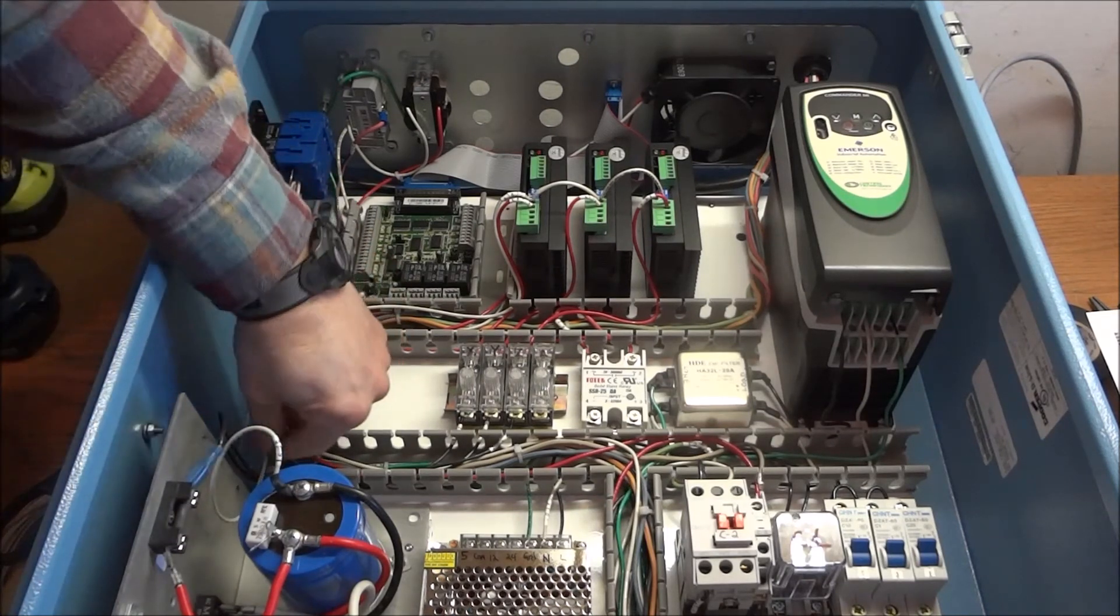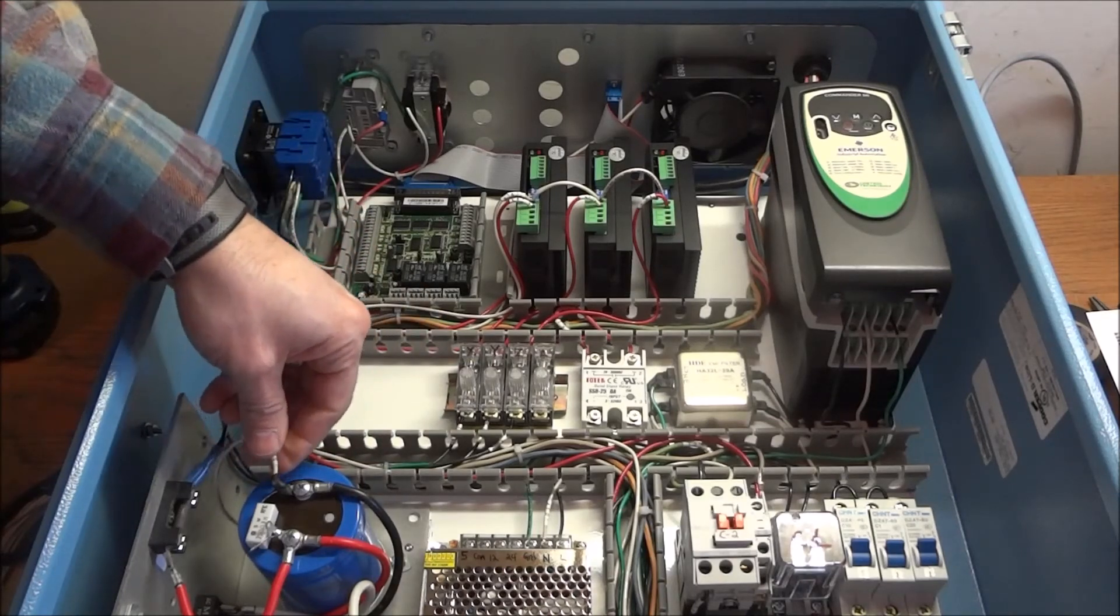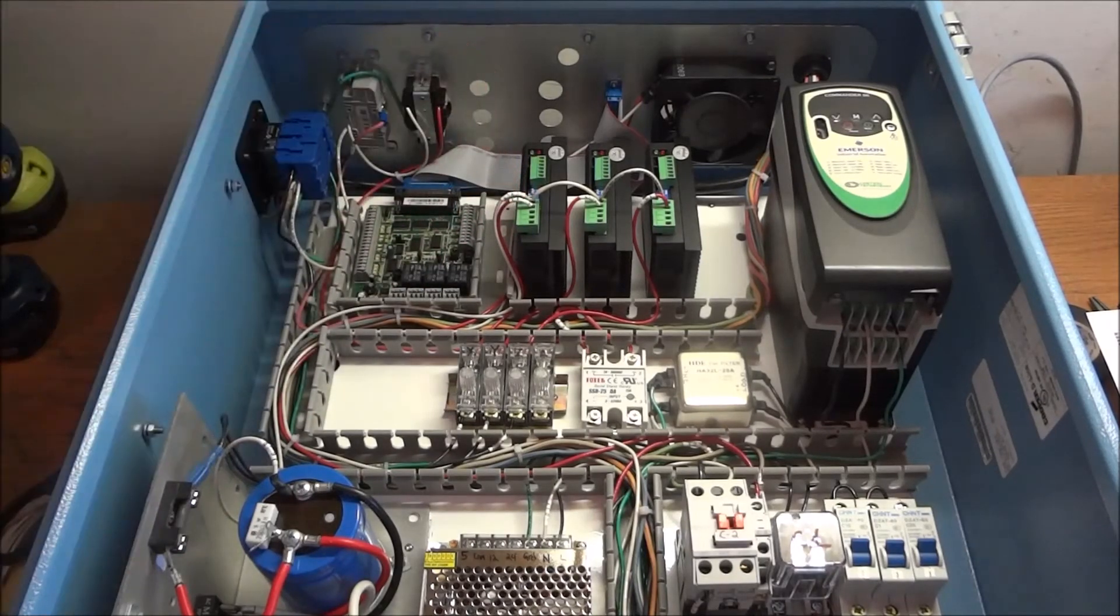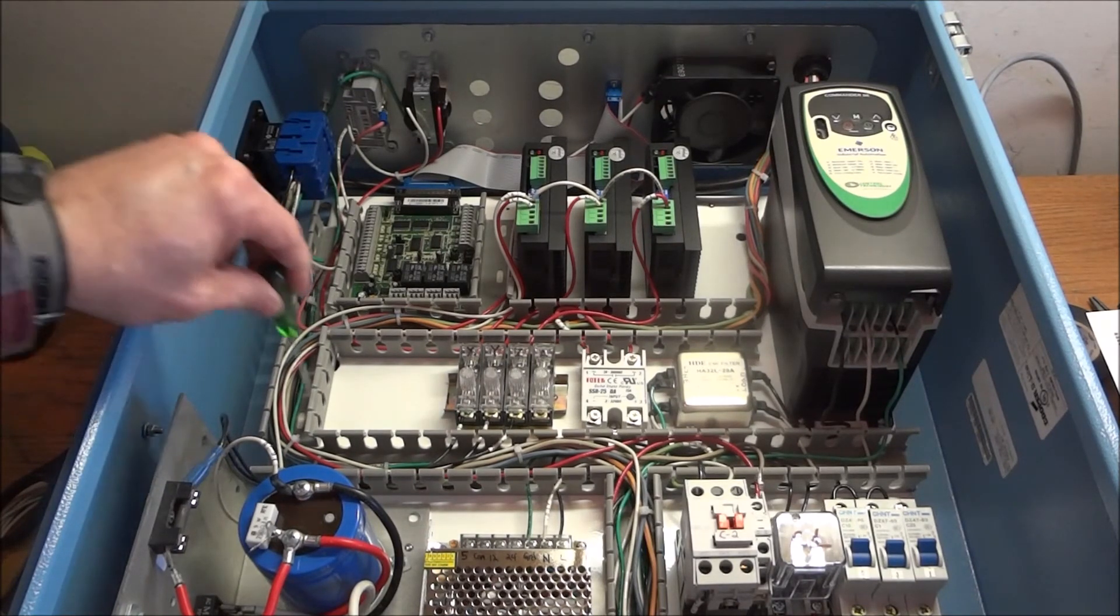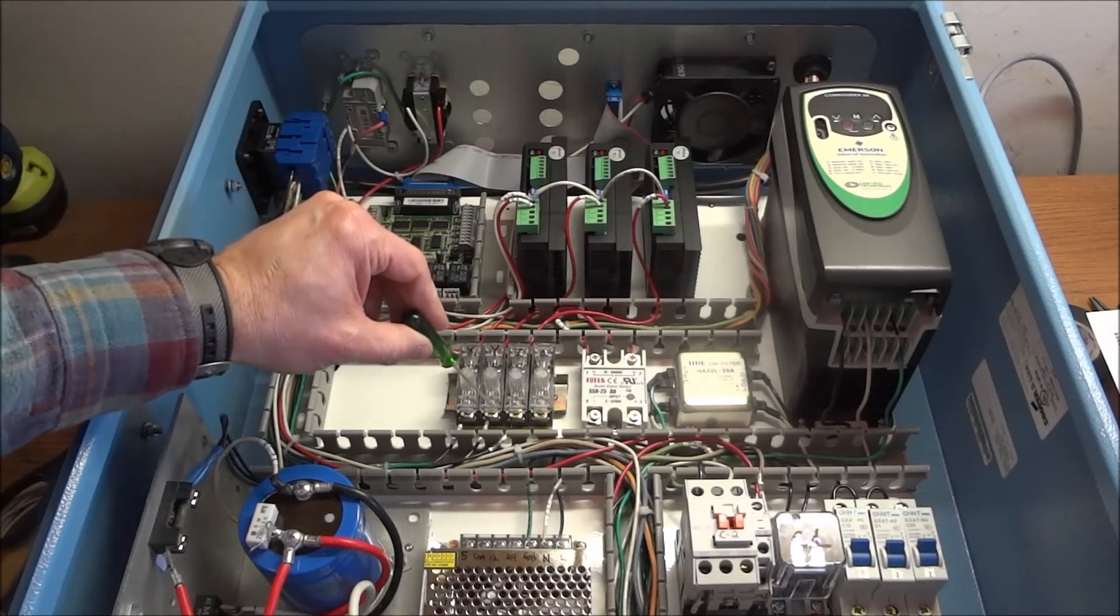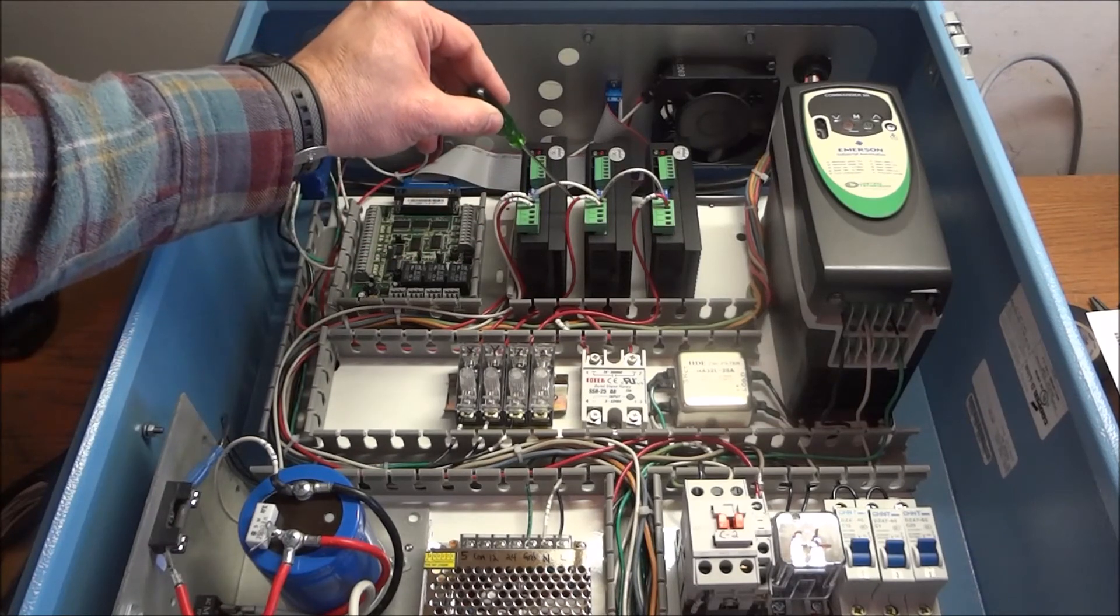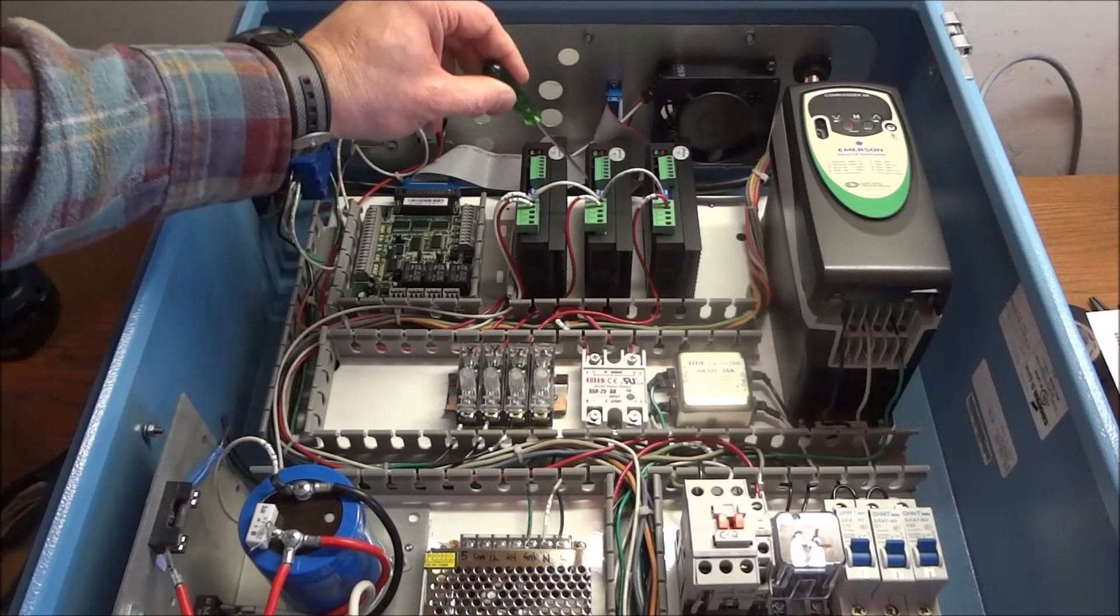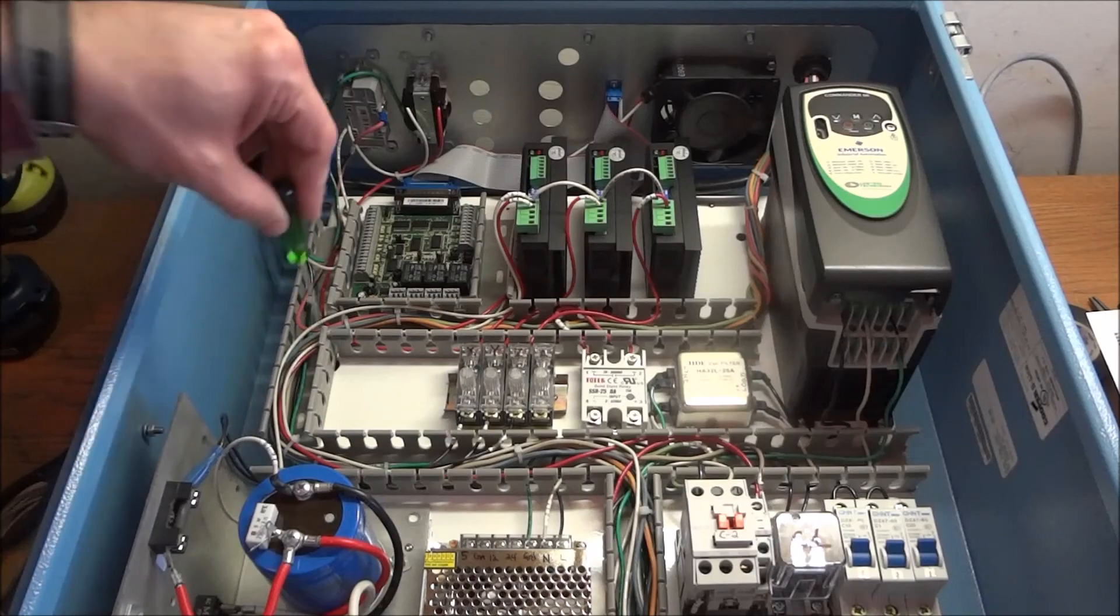So now we have our 48 volt power to our stepper motor drivers connected. We're going from our transformer over to our fuse, through our fuse up to each of the stepper drivers, and then we also have our ground going back to our 48 volt power supply.